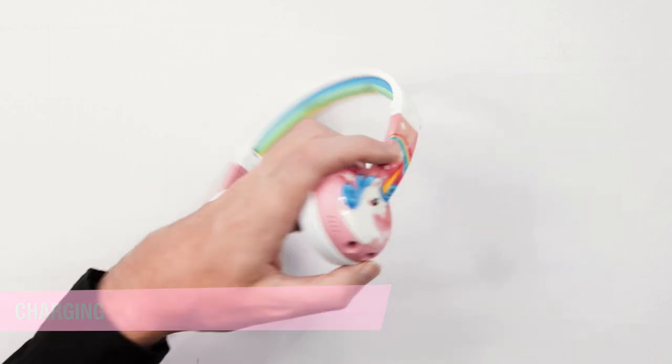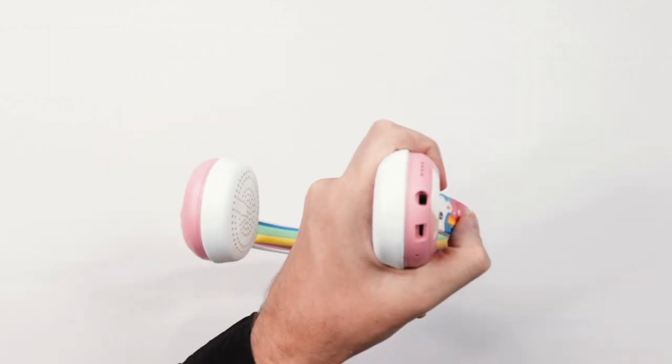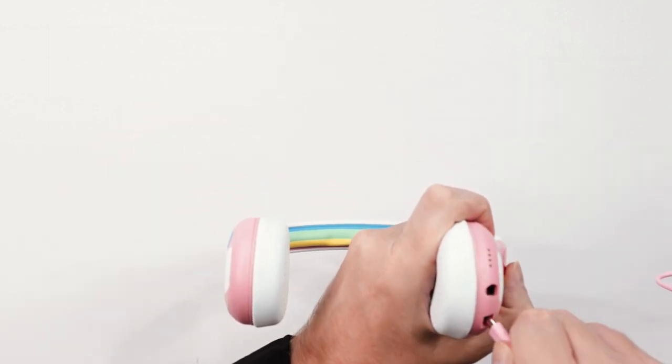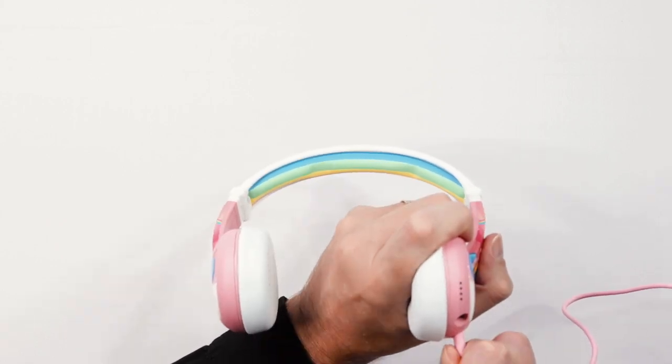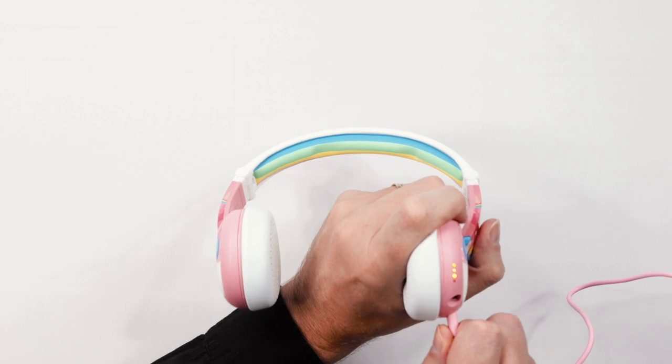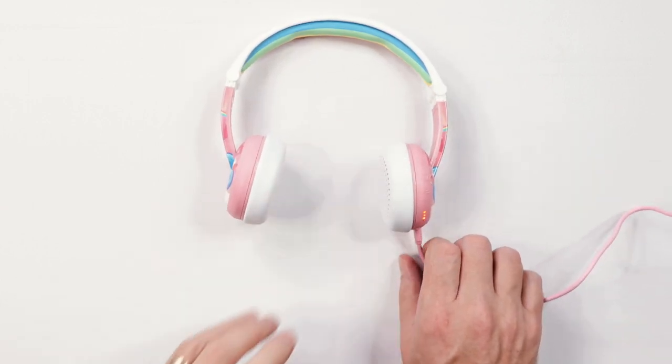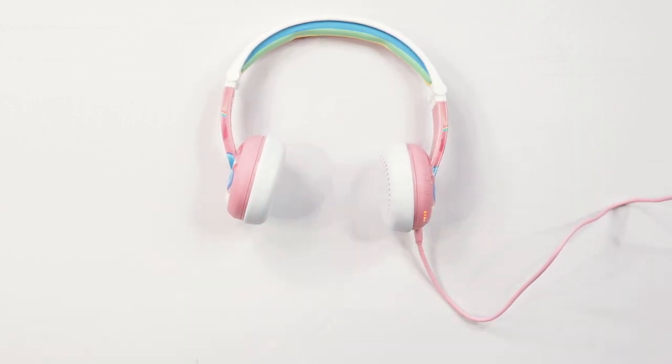To charge your headphones, insert the supplied USB charging cable into the charging port on your headphone. The LED lights will flash to indicate it is charging. When it is fully charged, the LED lights will stop flashing.